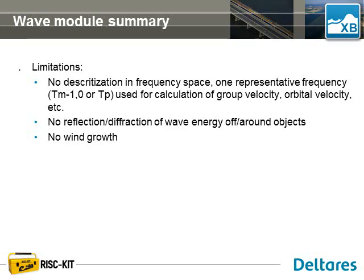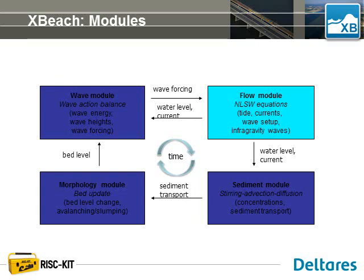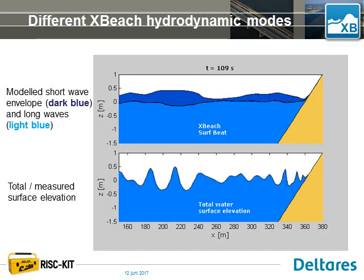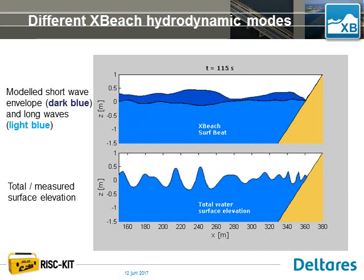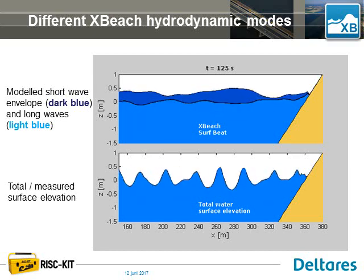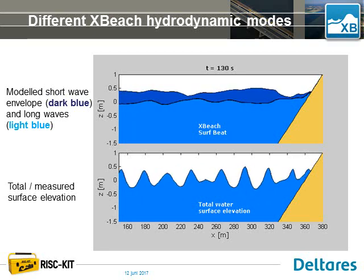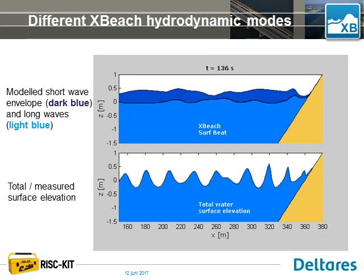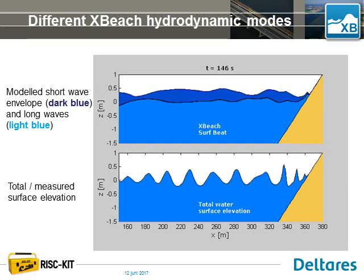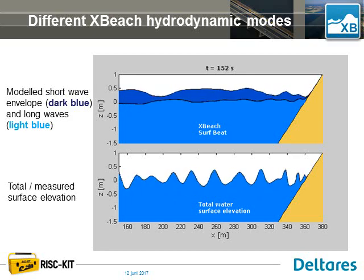With that, I'd like to go on to the next module in XBeach: the flow module that solves the tides, currents, and infragravity waves. Going back to the animation we saw earlier, the bottom panel shows the total water surface elevation. In the short wave module, XBeach solves the dark blue in the top panel, and it's that light blue section representing infragravity waves and tides that we're going to be looking at in the following slides.